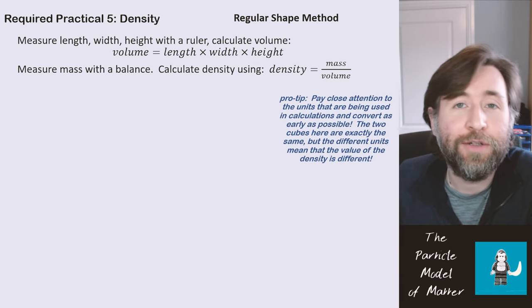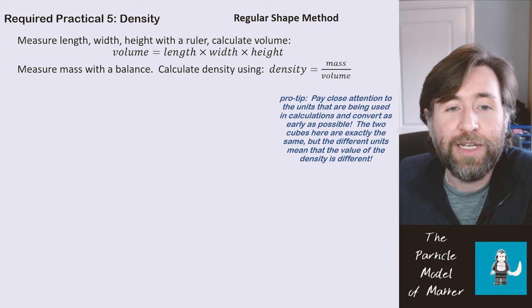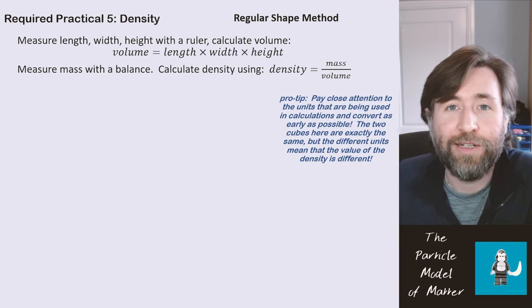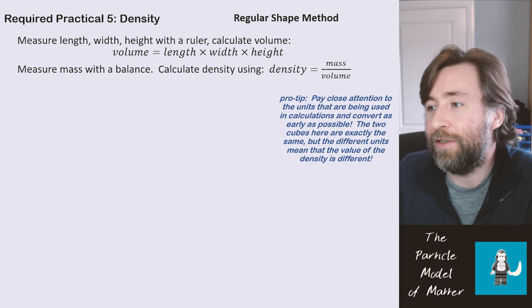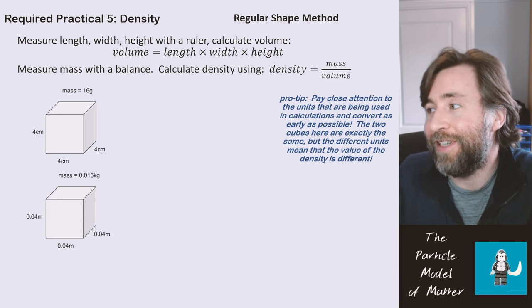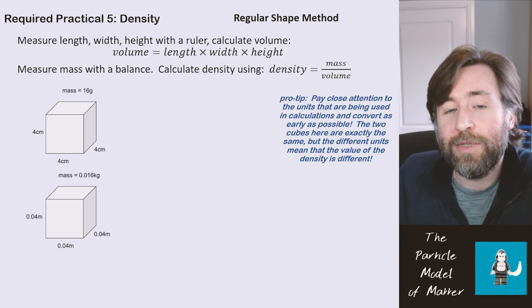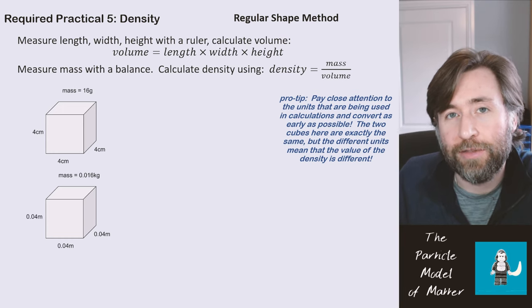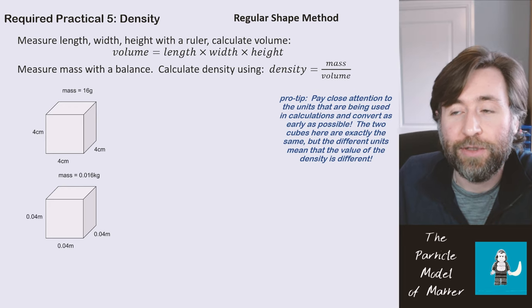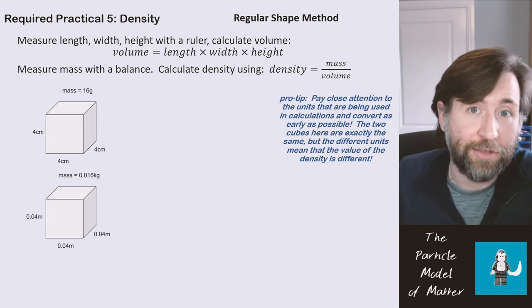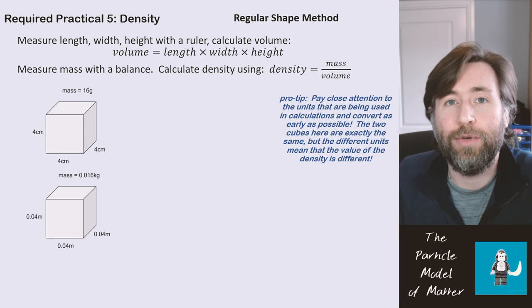Whenever you're asked questions about this practical, pay close attention to the units being used. Convert as early as possible, and I suggest before you've even calculated a volume. Because let's look at these two cubes here. They are exactly the same cube, but the units are different. So that means that the value, the number that you're going to get out for the density will be different, even though the densities are exactly the same. Just because the units are different, the actual number is going to be different.